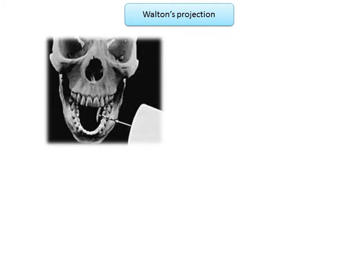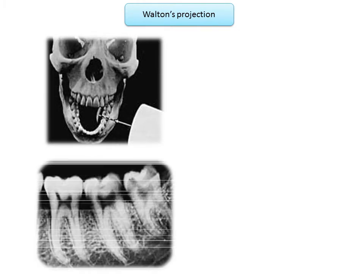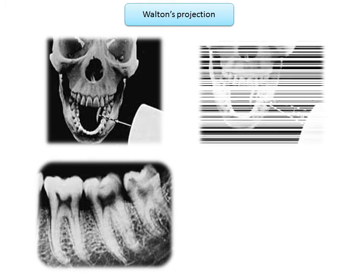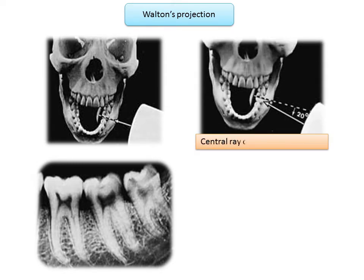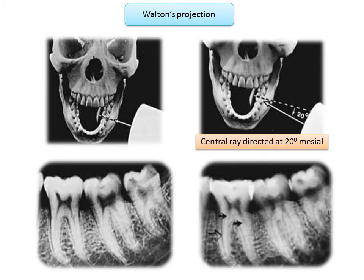Walton introduced an important refinement in dental radiography, demonstrating a simple technique to visualize this third dimension. Initially, when the central x-ray beam is directed parallel to the film, there is superimposition of the canals — only a single canal is visible in each root of the mandibular first molar. When the angulation is changed to 20 degrees mesial to the film, two canals become visible in both roots, marked by black arrows.